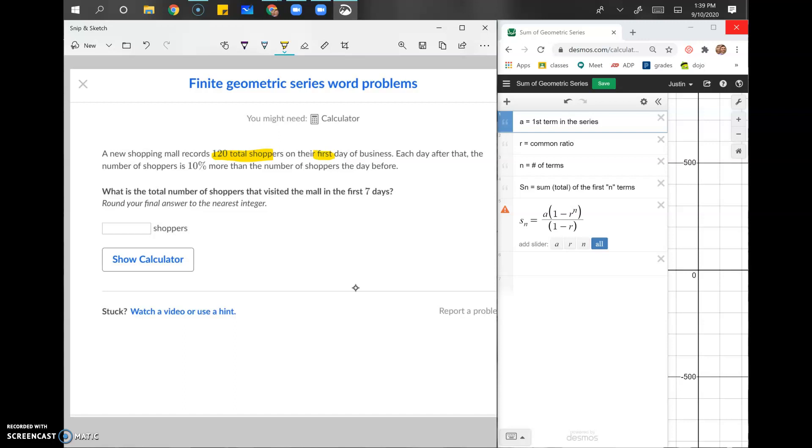A new shopping mall records 120 total shoppers on the first day of business. Each day after that, the number of shoppers is 10% more than the number of shoppers the day before. What is the total number, and I'm changing my color here, what is the total number of shoppers that visited the mall in the first seven days?